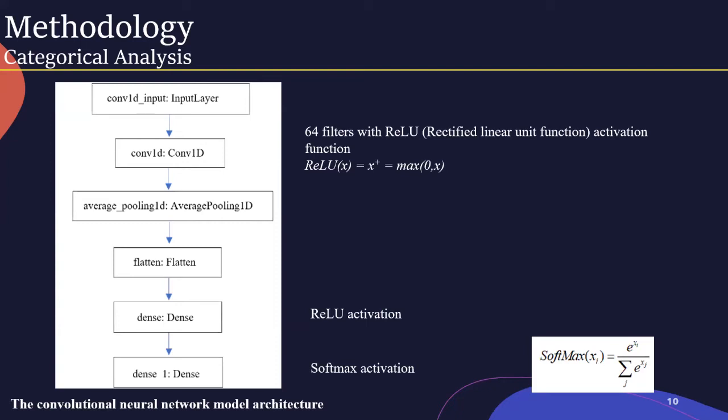The first layer of the network uses convolutional filters to create a feature map from an input API call stream. This layer uses 64 filters with a ReLU activation function. The following two layers flatten the generated feature map using mean pooling on segments within the generated feature map. Pooling is used to gradually decrease the dimensions of the attribute representations. The next layer is a standard feedforward layer in a deep learning architecture which transforms the generated feature vector using ReLU activation. The final layer then uses softmax activation to classify.